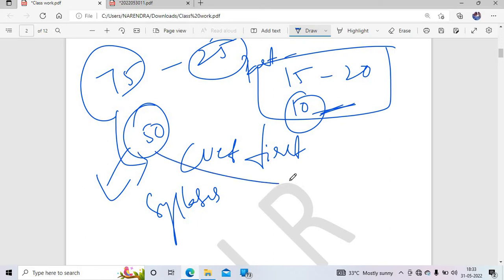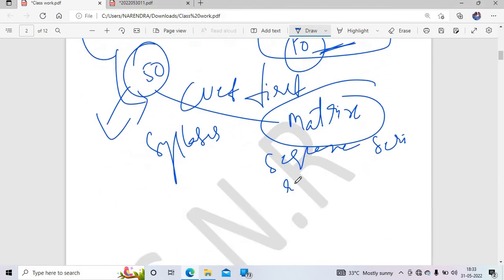For the 50 statistics questions, start with mathematics topics. From mathematics, start with matrix as it's very simple. Then move to sequence and series, then limits and continuity, differentiability, and mean value theorems.